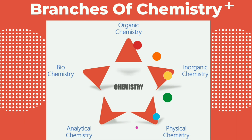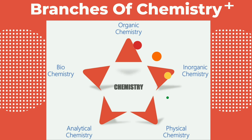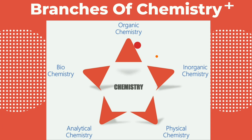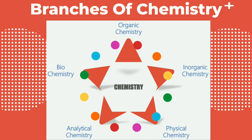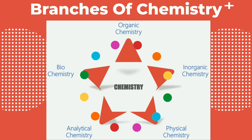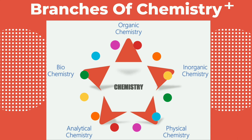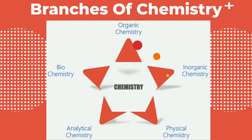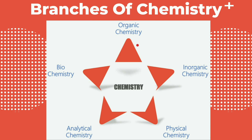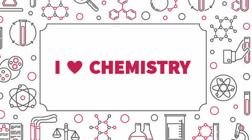The five primary branches of chemistry are: organic chemistry, inorganic chemistry, physical chemistry, analytical chemistry, and biochemistry. We first need to love this subject and then we can understand the concepts of chemistry to make beneficial and useful products in our society.